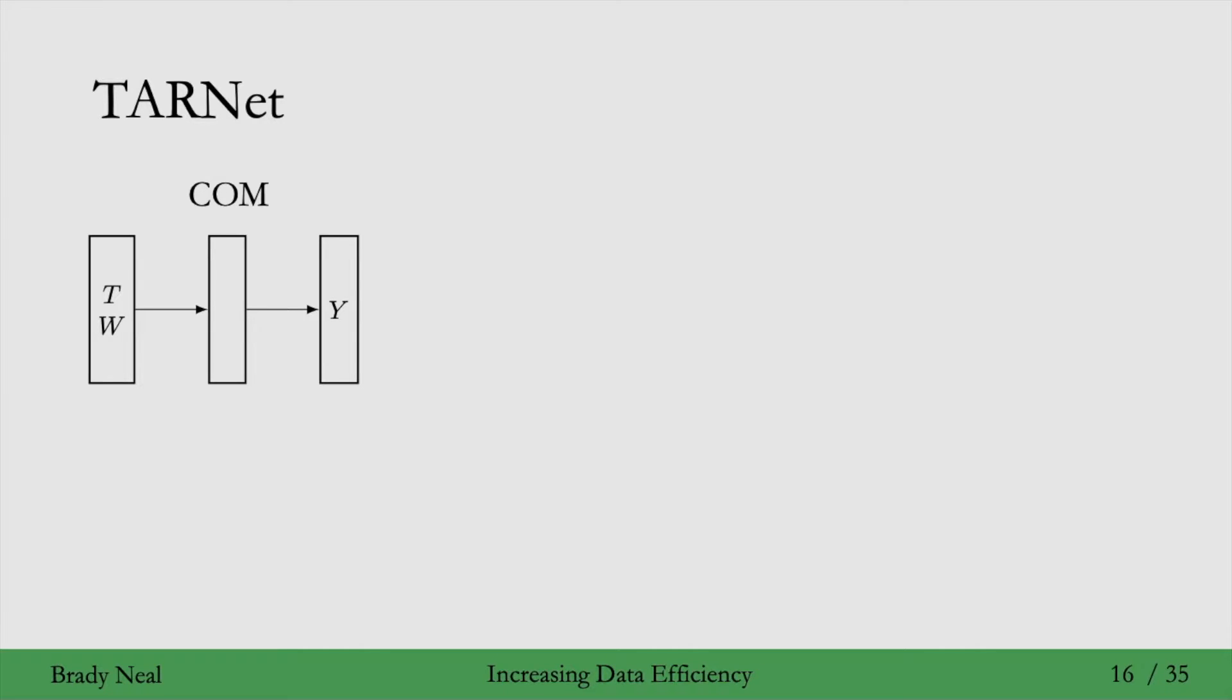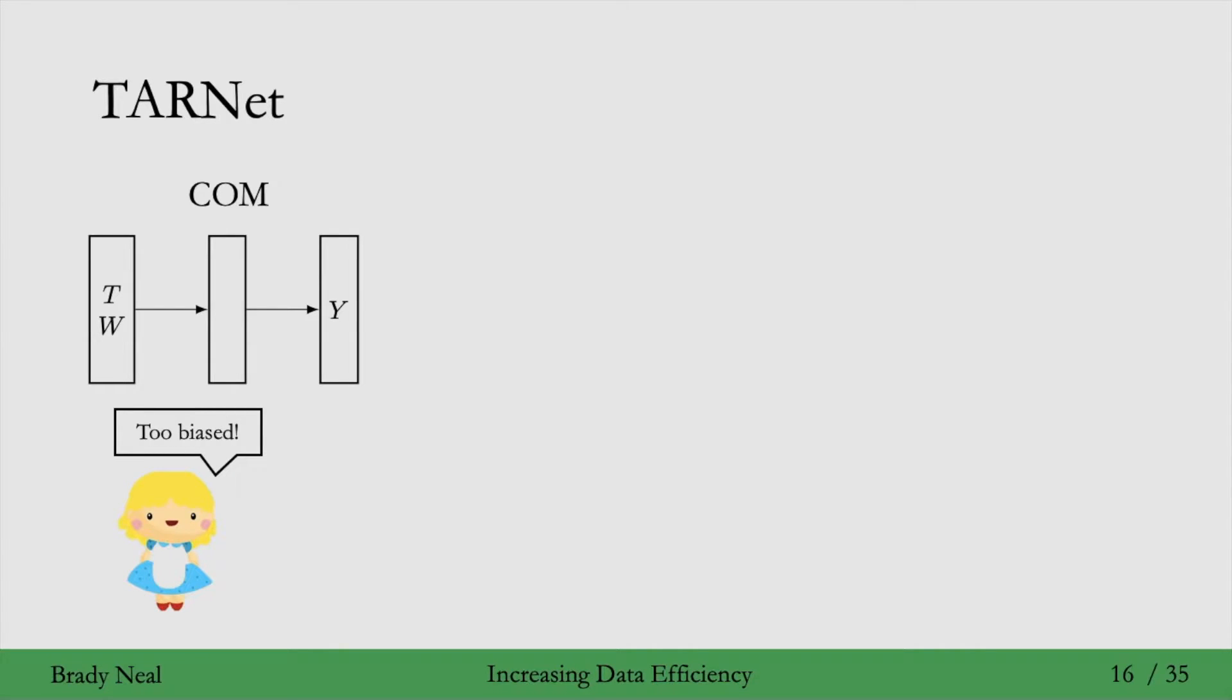We saw that the problem with this was bias. It could be biased toward zero, which led us to G-COM estimation. Here we depict two neural networks, one for the treatment group data, one for the control group data.